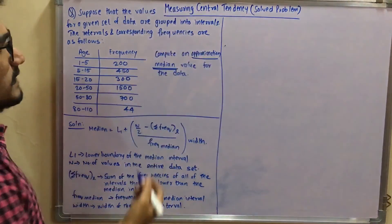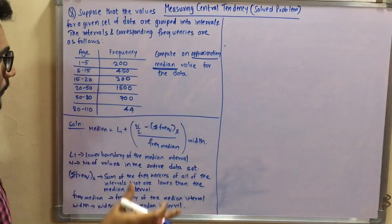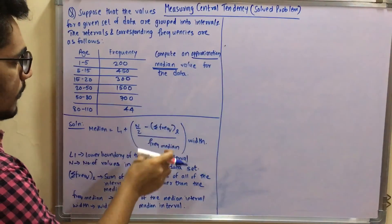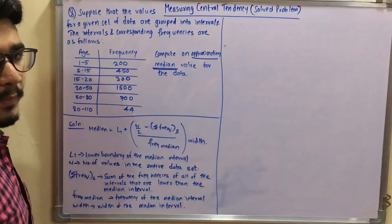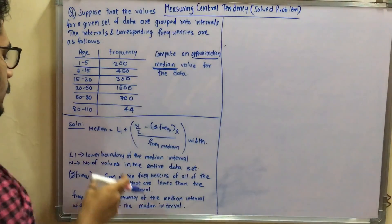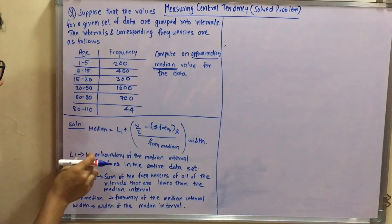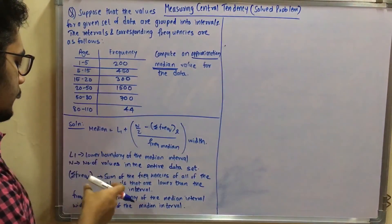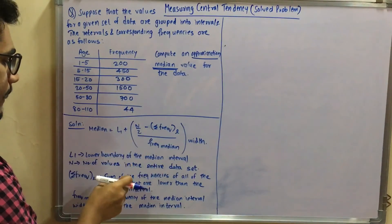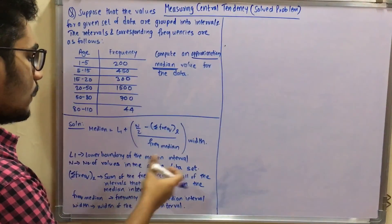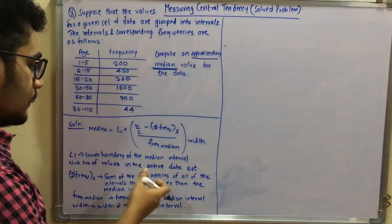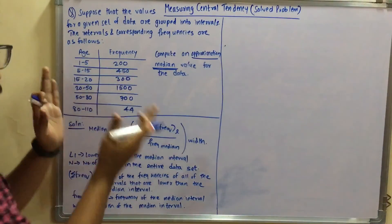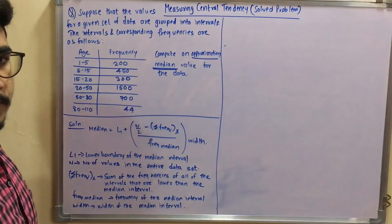We have to calculate the median, measuring the central tendency of the data. The formula for median is: L1 plus [(n/2 minus summation of frequency of the lower boundary) divided by frequency of the median interval] multiplied by its width. The parameters are: L1 — lower boundary of the median interval; n — number of values in the entire data set; summation of frequency of the lower boundary — sum of frequencies of all intervals lower than the median interval; frequency of the median interval; and width of the median interval.